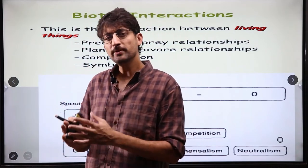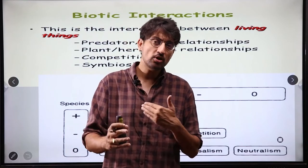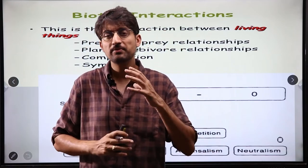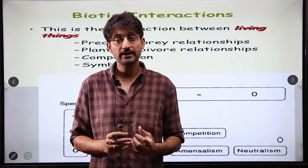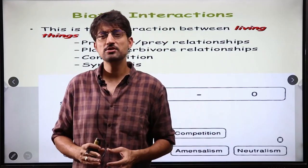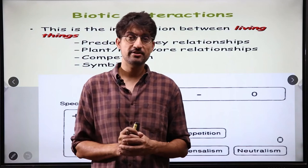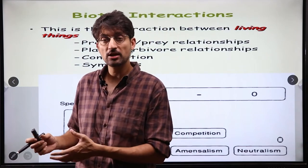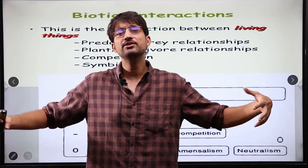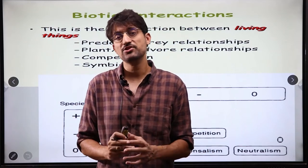One species is dependent on other species in nature. Between these different species, there are different kinds of interactions that emerge. Sometimes these interactions are positive, sometimes they may cause harm, sometimes they are neutral, and sometimes the interaction is negative. These interactions happen both within a species and between species, and we put these interactions under the category of biotic interactions.